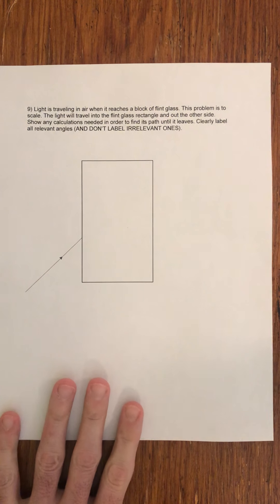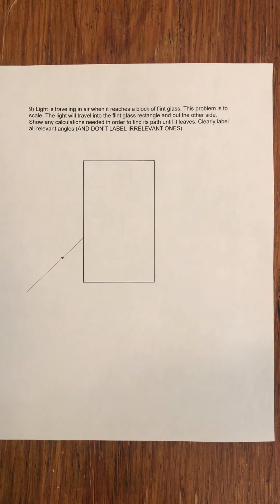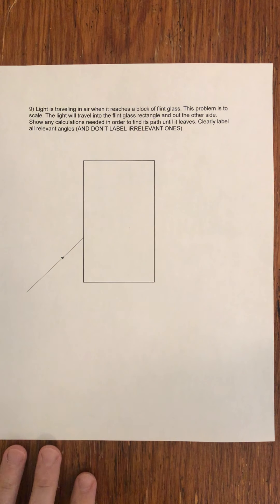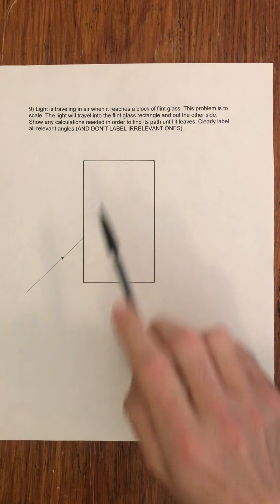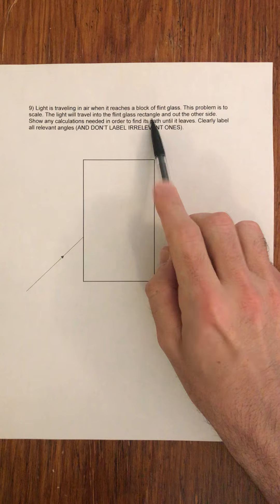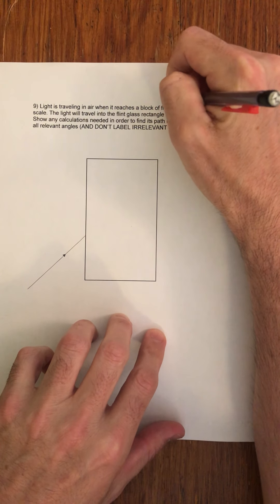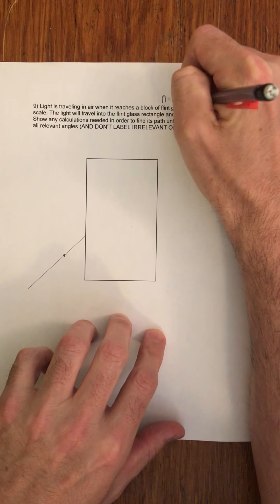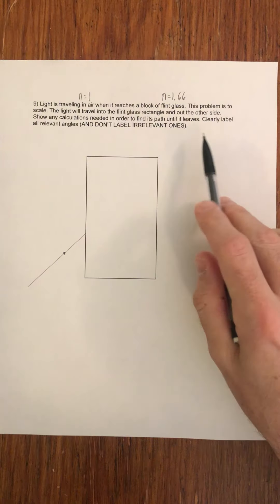What I want to do is model problem nine for you, which is a refraction problem, but it's a little bit different. So a couple of things here. Let's take a look at what we have. Light is traveling the air when it reaches a block of flint glass. The problem is the scale. The light will travel into the flint glass rectangle. By the way, flint glass, the second I see something like that, I am just going to write down the ends here. So it's an n of 1.66, n of air is one. Just get that out of the way.